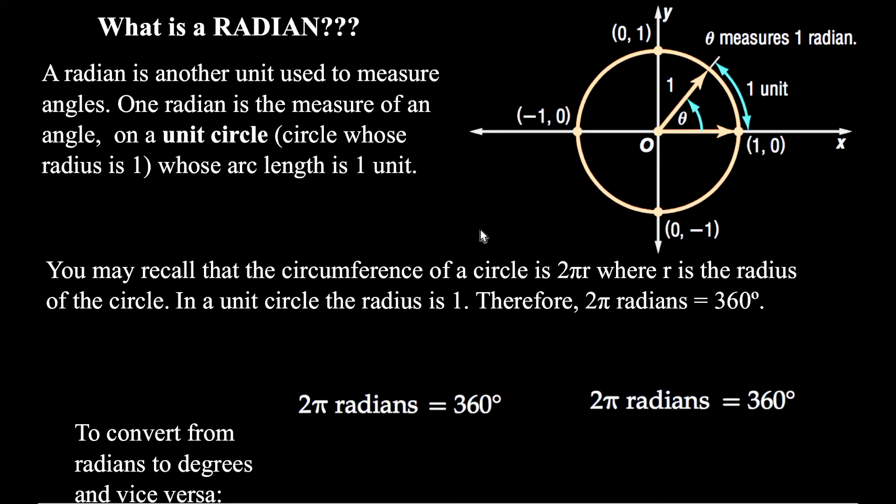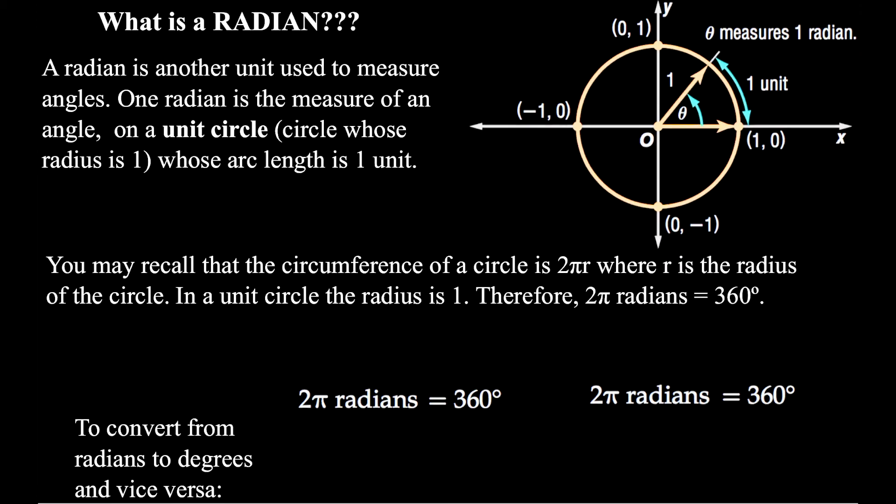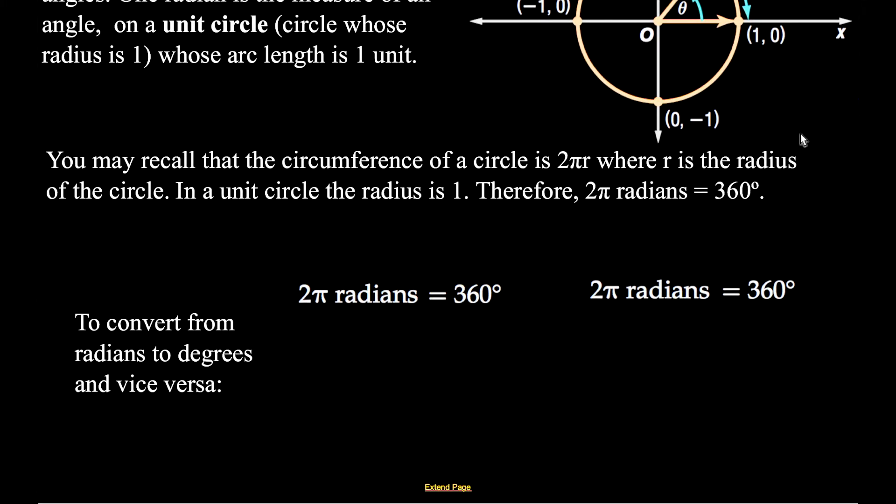So how is this useful? Well, you can recall that circumference of a circle is 2πr, where r is the radius of the circle. And since we're dealing with a unit circle, our radius is 1. So our 2π radians, the circumference of a unit circle, is the same as 360 degrees. Well, that's going to help us to do conversions back and forth between degrees and radians.